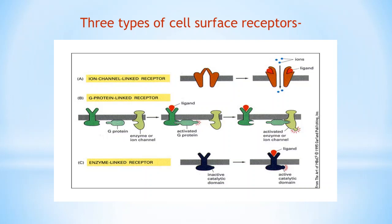G protein-coupled receptors indirectly regulate the activity of separate plasma membrane-bound target proteins, which can be either an enzyme or an ion channel. A trimeric GTP-binding protein called a G protein mediates the interaction between the activated receptor and the target protein. Without the G protein interacting with the receptor, the receptor cannot mediate downstream signaling. Enzyme-linked receptors function directly as enzymes or are associated with enzymes that they activate. They are usually single-pass transmembrane proteins with their ligand binding site on the external side and the catalytic or enzyme binding site on the cytoplasmic side. Examples include receptor tyrosine kinases.